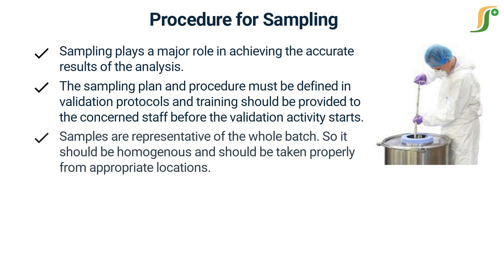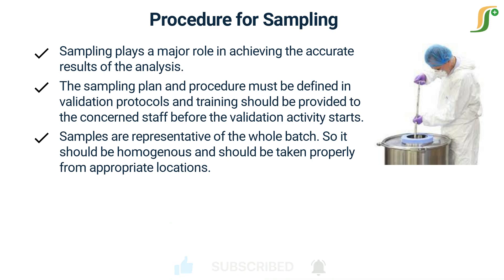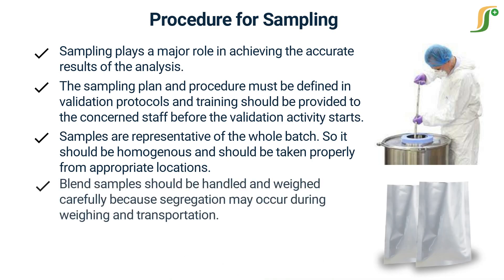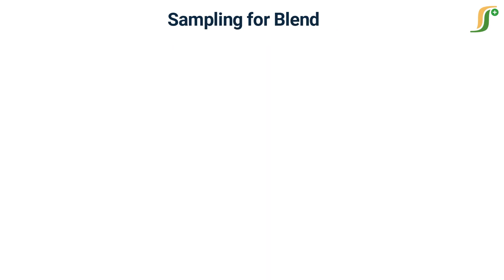Samples are representative of the whole batch, so they should be homogeneous and should be taken properly from appropriate locations. Blend samples should be handled and weighed carefully because segregation may occur during weighing and transportation. Sample quantity should not be more than required, and the whole mass of each sample should be used in the analysis.